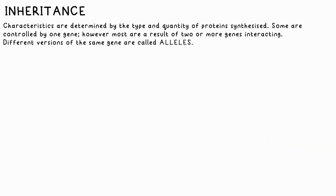Some characteristics are controlled by just one gene, like colorblindness. These different types of the same gene are called alleles. Usually, characteristics are dependent on two or more genes and how they interact.